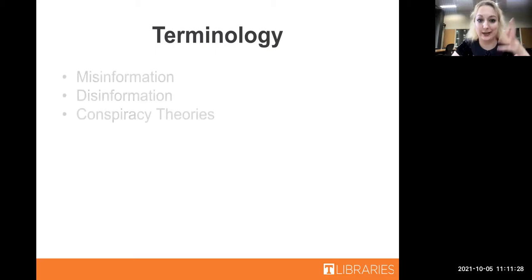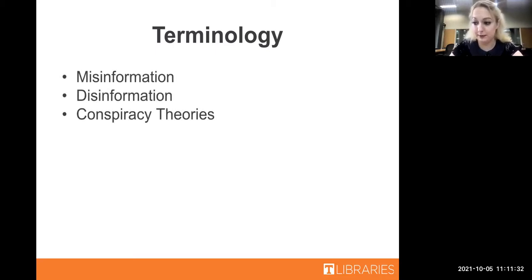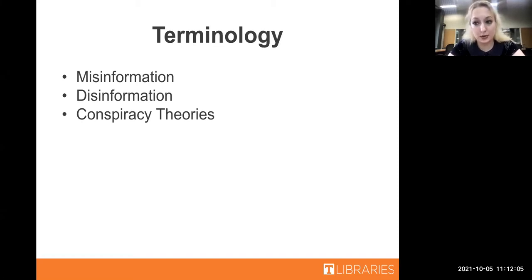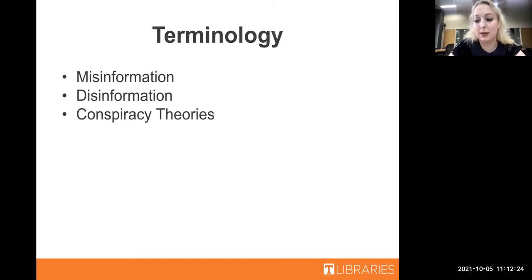A lot of what makes this topic intimidating is the jargon, so let me explain the three terms you'll hear most often: misinformation, disinformation, and conspiracy theories. Misinformation is untrue information circulated by a source that believes it to be true. Disinformation is untrue information circulated by a source that knows the information is untrue. Think of it this way: misinformation is the person who is lying to you but isn't aware they're lying. Disinformation is the person who's lying to you and knows exactly what they're doing. Anyone can be the person spreading misinformation, realize they were wrong, and be responsible enough to address that mistake - but the person who's intentionally lying to you is someone you're not going to trust in the future.